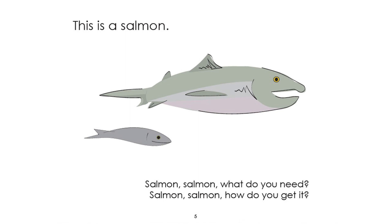What do you predict that the salmon needs to live and grow, and how do you think the salmon may get it? Type that in the chat box. Students respond: they need food, they hunt, they need water. Salmon will definitely swim. Someone has a big science word — digestion. Food and water and shelter.